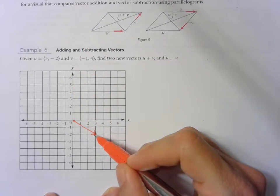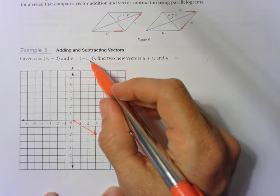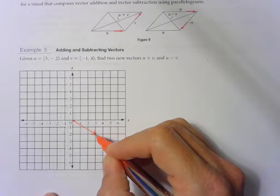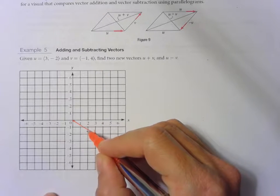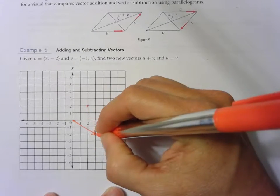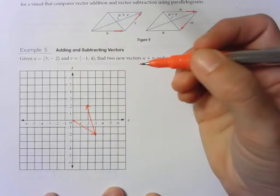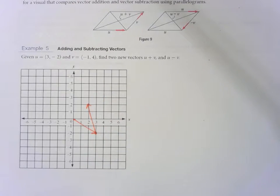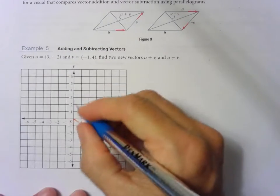This is where it stops. From here, we draw the vector v. So from here we go <-1, 4>.